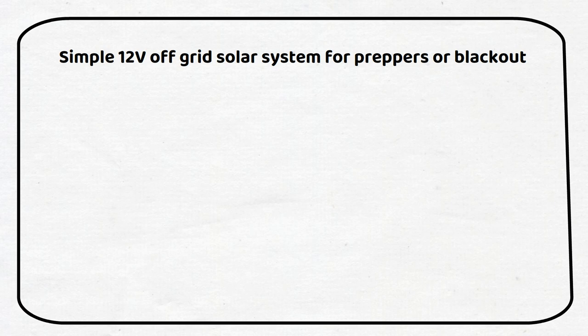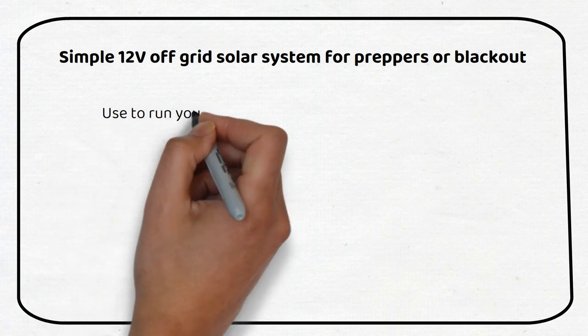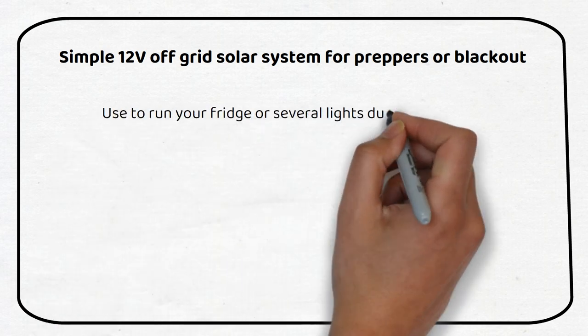In this video you will learn how to make an easy 12 volt off-grid system to run your fridge. I won't add solar panels to the system to keep it simple. This system is ideal for a backup solution when there is a blackout.